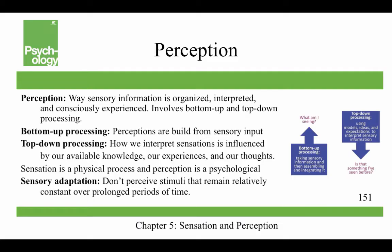Perception is the way sensory information is organized, interpreted, and consciously experienced. It involves both bottom-up and top-down processing. Bottom-up processing is when perceptions are built from sensory input, and top-down processing is how we interpret sensations influenced by our available knowledge, experiences, and thoughts — our preconceived notions that we bring to perception. Sensation is a physical process, and perception is a psychological process, and not all sensations result in perceptions.